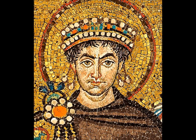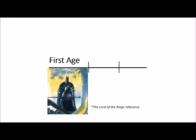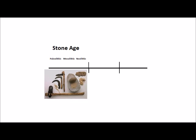The Three Age System is a method used by some scholars to divide the past. The First Age — just kidding — is actually the Stone Age.